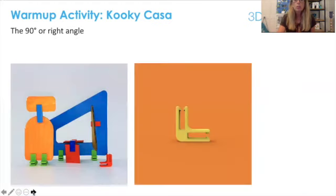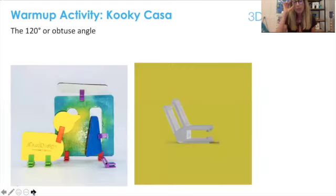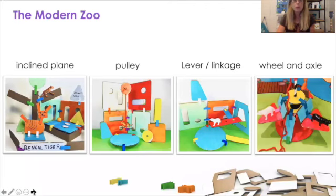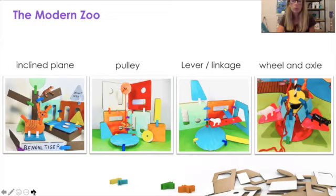Once your students are done learning their angles and adapting them to create different structures for their home, they're ready for some of our other lesson plans and design challenges — for example, the tiny house challenge, the modern zoo challenge which includes the different angles and building with simple machines, and our busy bee and pollinator pathway project.